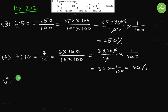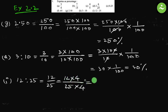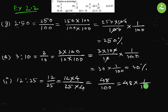Part i, the last one: 12 is to 25. Convert ratio to fraction: 12 by 25. To keep the calculation easy, we multiply both numerator and denominator by 4 to make the denominator 100. So 12 multiplied by 4 is 48, and 25 multiplied by 4 is 100. This means 48 multiplied by 1 by 100, which equals 48 percent.